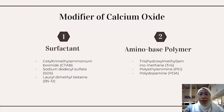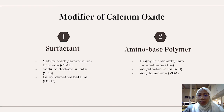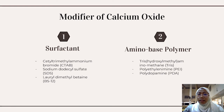This study also aims to modify the calcium oxide. The first type of modifier is surfactant, which consists of three types: cetyl trimethyl ammonium bromide (CTAB), sodium dodecyl sulfate (SDS), and lauryl dimethyl betaine (BS12). The other type is amino-based polymer, including trihydroxymethyl aminomethane (Tris), polyethylenimine (PEI), and polydopamine (PDA). These modifiers — surfactants and amino-based polymers — will be added after the production of calcium chloride and before the formation step with sodium hydroxide or sodium carbonate.